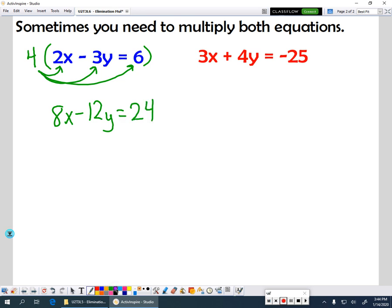Now I need to do the same thing over here, except again, remember we want this y value to be a 12. So I'm not going to multiply by 4, I'm going to multiply by 3 this time. So 3 times 3 would give me 9x. 3 times 4 is going to give me 12y, and it's a positive 12y, which is good because those will eliminate then. And then 3 times negative 25 will give me negative 75.